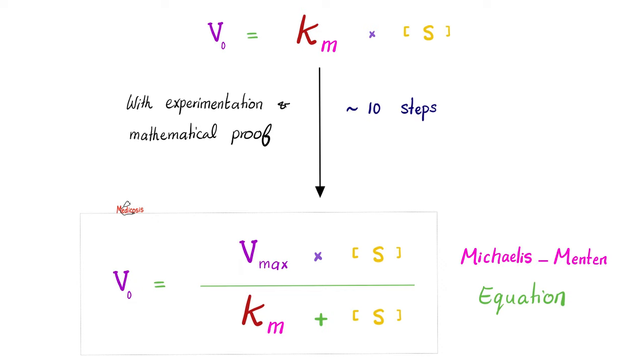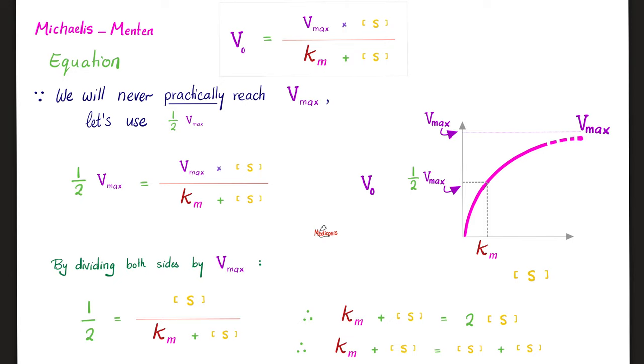Michaelis Menten started with this and then with experimentation and mathematical proof that took about 10 steps, which is beyond the scope of this video, they arrived at the Michaelis-Menten equation, which is this. If you want me to make a separate video to describe the 10 steps of the mathematical proof, I can do it. But for now, please memorize this Michaelis-Menten equation. This is the initial rate or initial velocity. This is the maximum rate of the reaction. Substrate concentration, Michaelis-Menten constant.